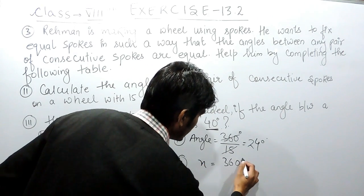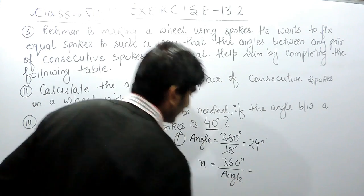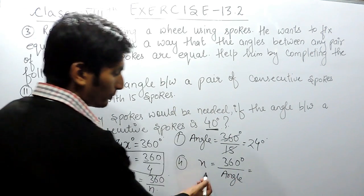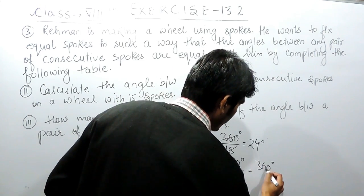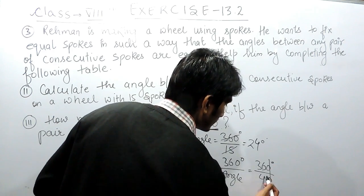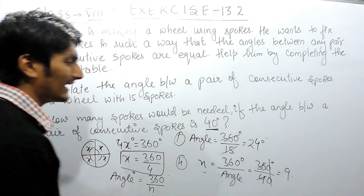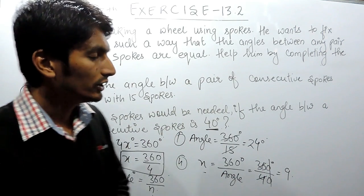Clearly, to find the number of spokes, we have to divide 360 by the angle, which is equal to 40 degrees. I can cancel this, and here the number of spokes must be 9. So this is how you can solve this question.